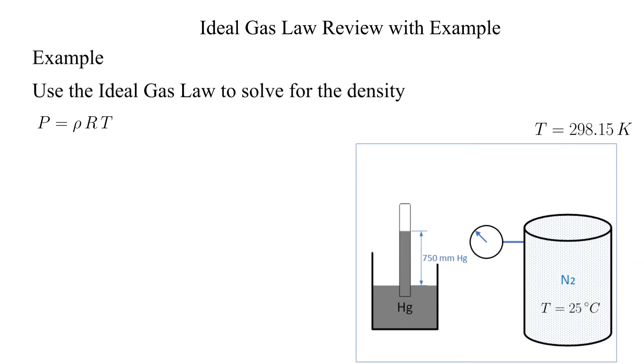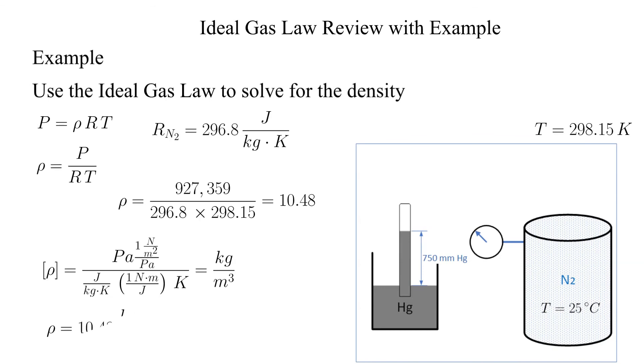Now we have everything we need. All we have to do is plug in the absolute pressure, absolute temperature, and the gas constant for nitrogen into the ideal gas equation and solve for the density. Although this sounds simple, we need to worry about units, so we do a separate check on the units.